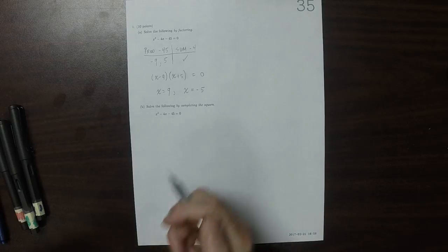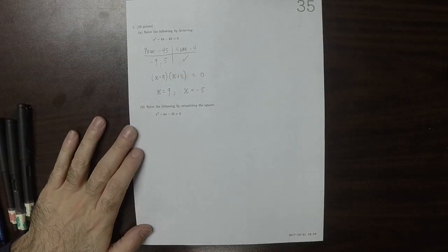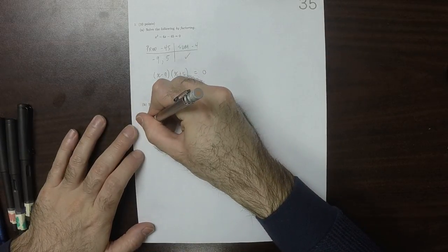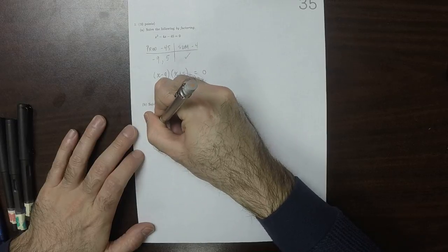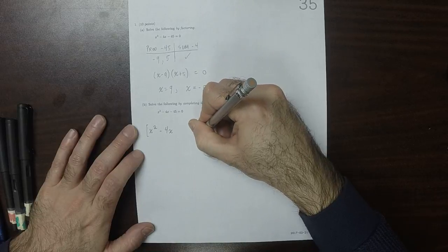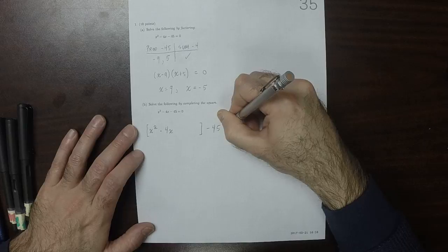In Part B, we're supposed to solve the same equation, but now we're supposed to complete the square. Okay. So we'll collect everything that has x together, and then exclude everything that doesn't have x outside of the group,